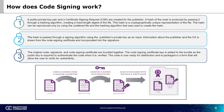The hash is passed through a signing algorithm using the publisher's private key as an input. Information about the publisher and the CA is drawn from the code signing certificate and incorporated into the signature. The original code, signature, and code signing certificate are bundled together. The code signing certificate key is added into the bundle, as the public key is required to authenticate the code when it is verified. The code is now ready for distribution and is packaged in a form that will allow the user to verify for authenticity.